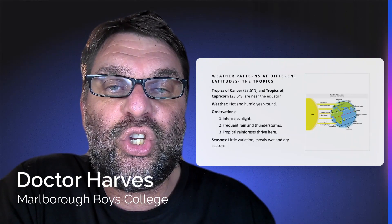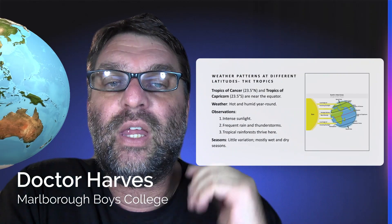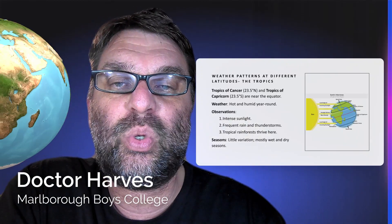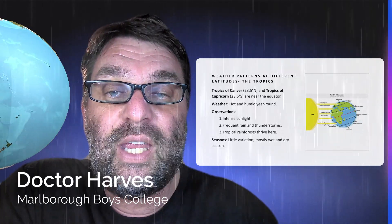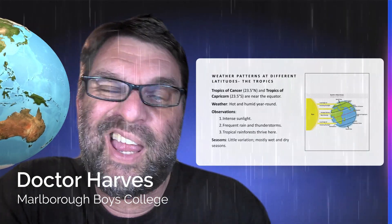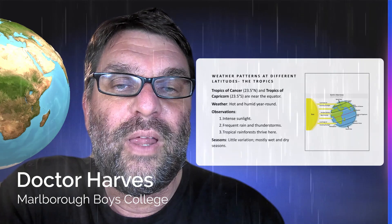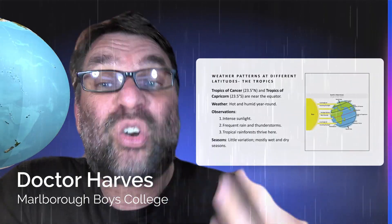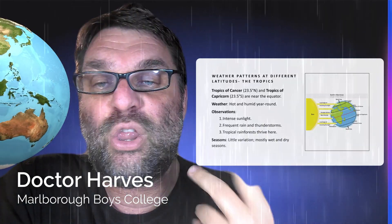Looking at climate and weather patterns at different latitudes, we'll first look at the tropics. On Earth, the equator sits at zero degrees, with the Tropic of Cancer at 23.5 degrees north and the Tropic of Capricorn at 23.5 degrees south. In the tropics, the weather is hot and humid all year round, with intense sunlight, frequent rain and thunderstorms, and tropical rainforests thriving there. There's little seasonal variation — basically just a dry and a wet season. These positions receive the most direct sunlight, essentially at a 90-degree angle to the surface, causing intense evaporation, cloud formation, and heavy rainfall.